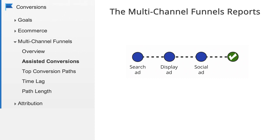A channel can play three roles in a conversion path. Last interaction is the referral that immediately precedes the conversion. Assist interaction is any referral that is on the conversion path but is not the last interaction. First interaction is the first referral on the conversion path — it's a subset of the assist interactions.